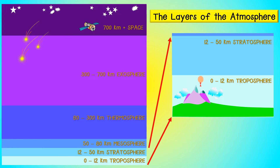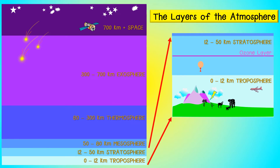Weather balloons used to make weather predictions move in the stratosphere. The ozone layer of the atmosphere is also found in the stratosphere and helps to protect living things from the ultraviolet rays of the Sun. The troposphere is where living things exist and where most weather occurs. The highest mountains and airplanes operate in the troposphere.